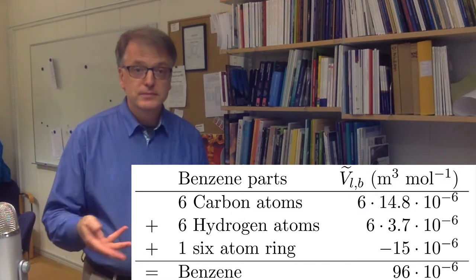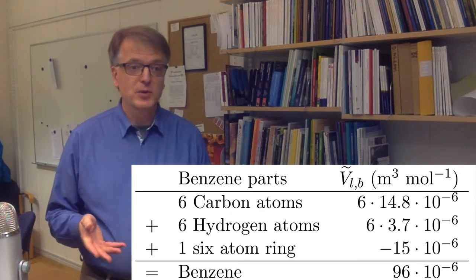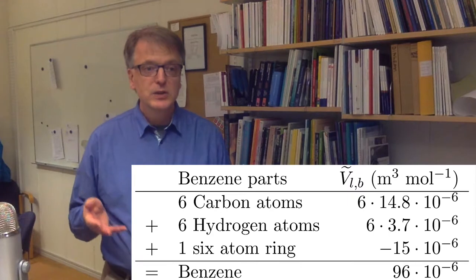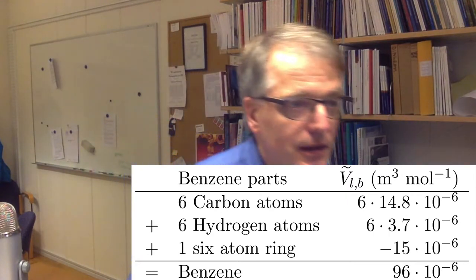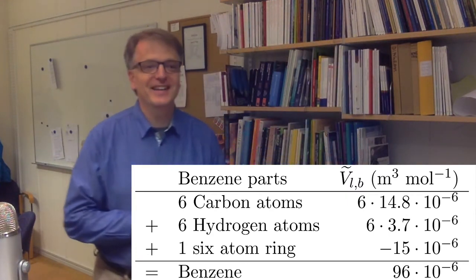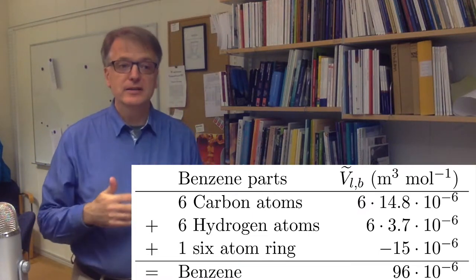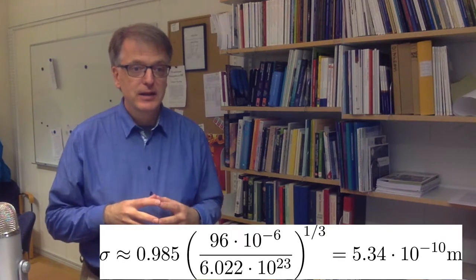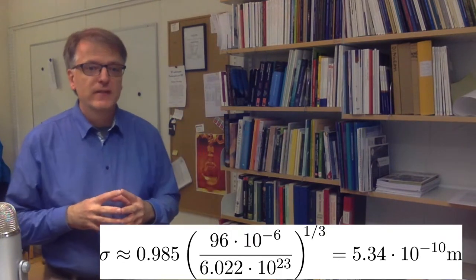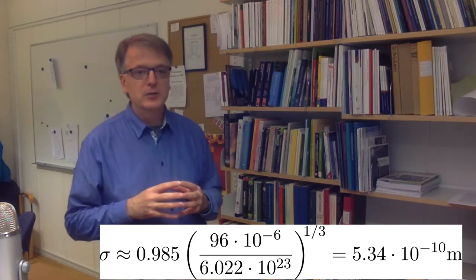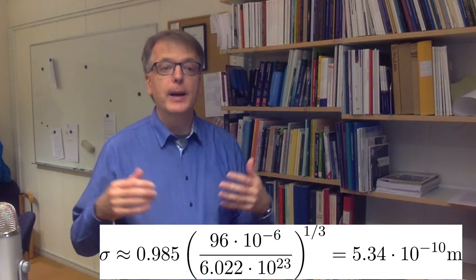Or if you want 1.59, 10 to the power minus 28 cubic meters per molecule. And you can recalculate that to the characteristic collision diameter like this. And then you get 5.34, 10 to the power minus 10 meters.